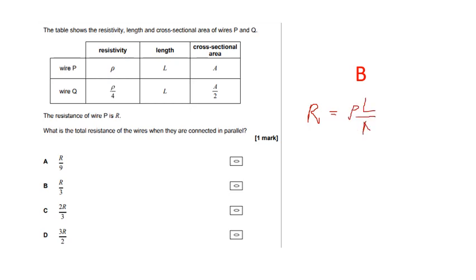So wire P is R equals rho L over A. Now, for wire Q, the resistivity is a quarter. So what I'm going to do is write down times a quarter. The length is the same, I don't need to worry about that. The cross-sectional area is a half, so we're going to divide by a half. And dividing by a half is the same as multiplying by two.